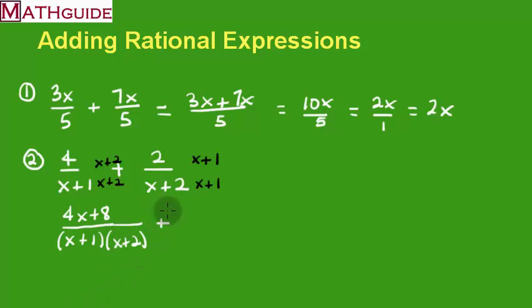Let's look at the second fraction and multiply. We get 2x plus 2, and we're going to get the same denominator, x plus 1 times x plus 2. Since we have our common denominator, we can add the numerators together.